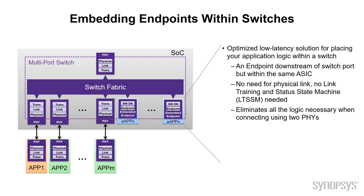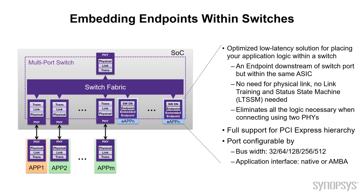You can see the traditional way of building a switch: these endpoints are external and communicating via a PHY. The nice thing about the embedded endpoint is there's no need for this physical link at all. Not only do you get rid of the physical link and the PHYs, but you get rid of the link training and status state machines as well — a lot of logic you don't need. We eliminate this redundant logic and implement this in such a way that we completely support the PCI Express hierarchy, and it's transparent to the host. We maintain configurability; the bus width can be anywhere from 32 all the way up to 512, and the application can use a native interface or an AMBA interface.